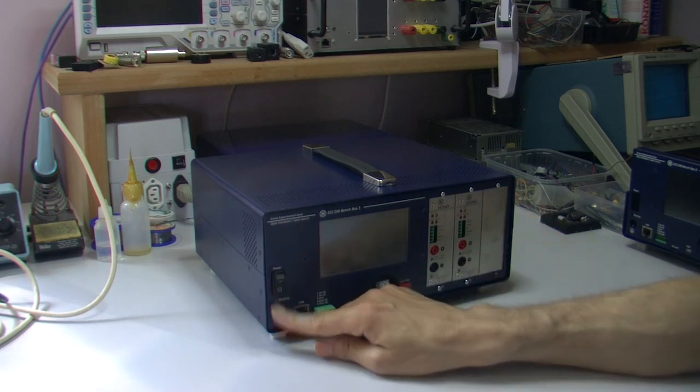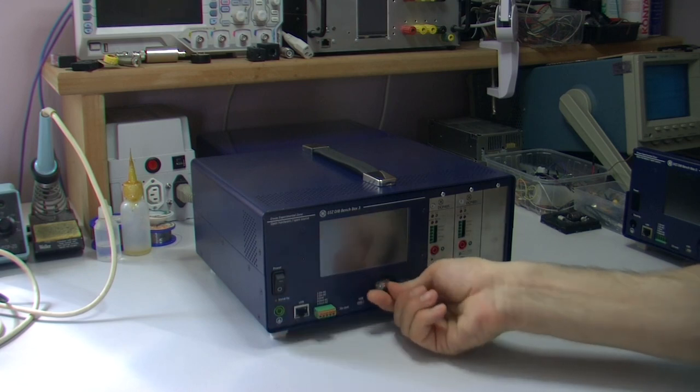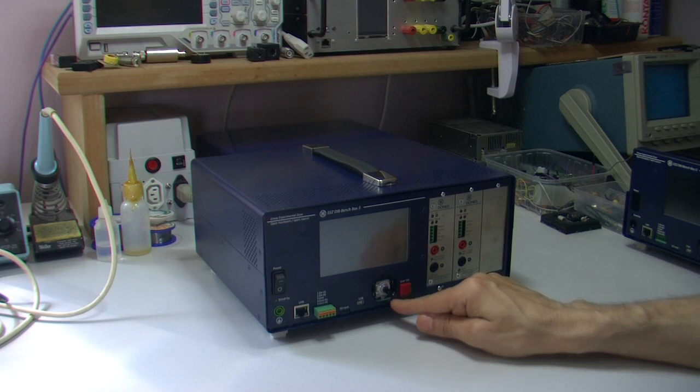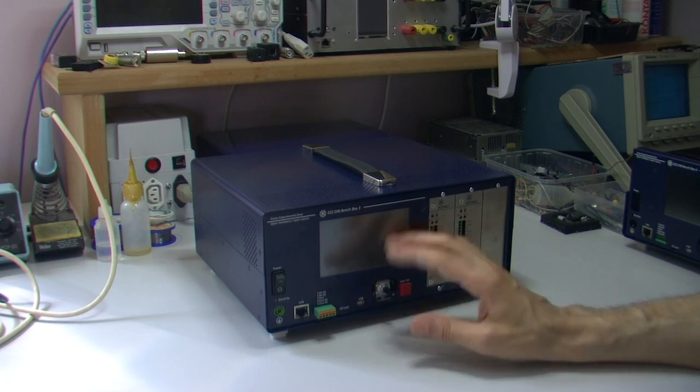So we have here, first we have power switch, standby indication, protective earth, encoder. The knob is missing because this hole is not properly adjusted. It's a prototype so there are many other issues we found but we are working on it.